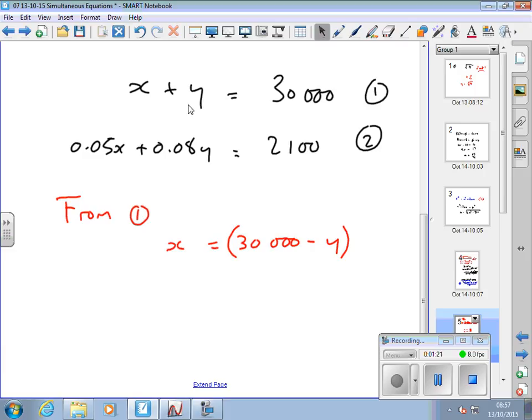How might that be useful in equation number two? I now know that X equals that expression there, 30,000 minus Y. So what can I do in equation? Exactly. Good word. I can substitute in to this equation number two. Instead of X, I can write that expression.